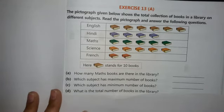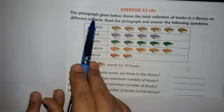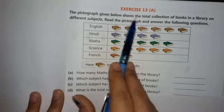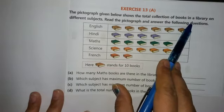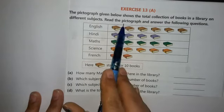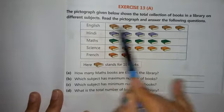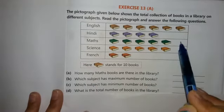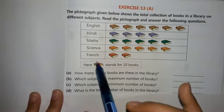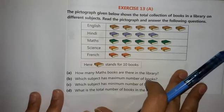Read the statement: The pictograph given below shows the total collection of books in a library on different subjects. Read the pictograph and answer the following questions. Now here you are given a pictograph which shows how many books are in a library based on different subjects.